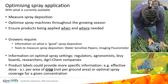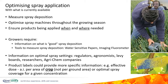So what are the options for growers with current technologies and spray equipment? They can measure spray deposition in the crop and alter settings, optimizing spray machines throughout the growing season to reduce overall applications of pesticides and ensure products are applied not only when but also where they are needed. To do this, growers need more information: first, information on what good spray deposition for the product, target, and crop is; and second, they need tools to measure spray deposition on their crop.